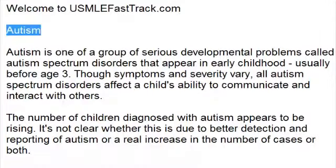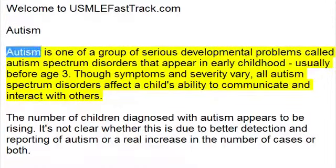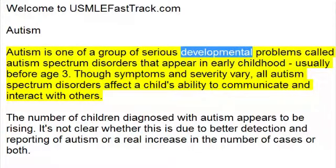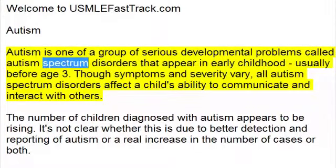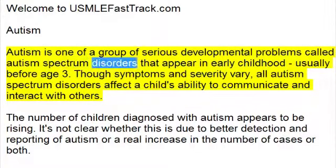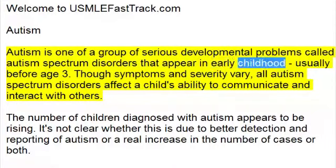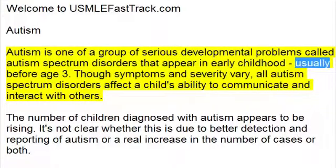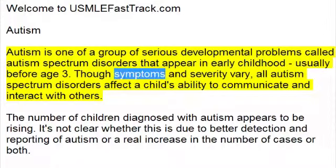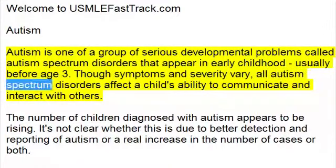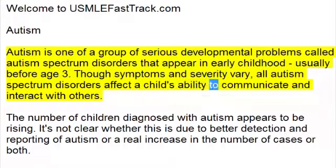Autism is one of a group of serious developmental problems called Autism Spectrum Disorders that appear in early childhood, usually before age 3. Though symptoms and severity vary, all Autism Spectrum Disorders affect a child's ability to communicate and interact with others.